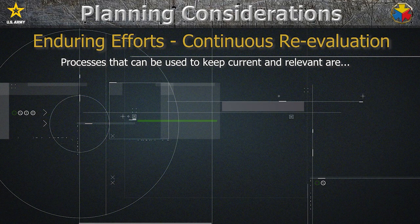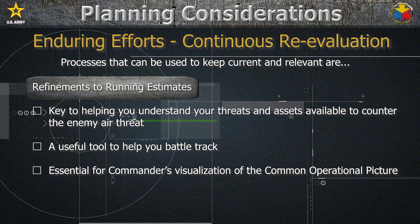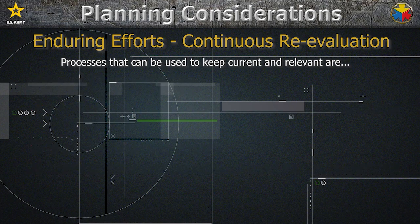As AMD IPB is a continuous effort, we will cover some processes that can be used to keep current and relevant. Foremost, maintaining an accurate and updated running estimate is key to helping you understand your threats and assets available to counter the enemy air threat. The running estimate is a useful tool to help you battle track and is essential for helping your commander visualize the common operating picture. Two other processes that can help with planning, tracking, and mitigating UAS threats in the battle rhythm are the Protection Working Group and the Targeting Working Group.